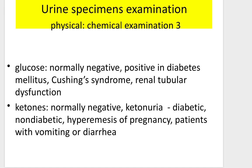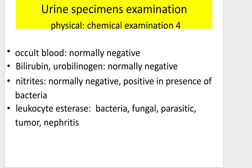More chemical examination: occult blood normally negative. Bilirubin and urobilinogen normally negative. Nitrites are normally negative but can be positive in the presence of bacterial infection. Leukocyte esterase can be positive in bacterial, fungal, and parasitic infections and nephritis. Microscopic examination of urine includes checking for red blood cells, white blood cells, epithelial cells, bacteria, casts (cylindrical molds), which indicate damage of the glomerular basement membrane or tubules.